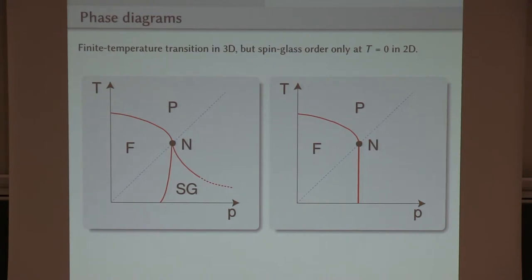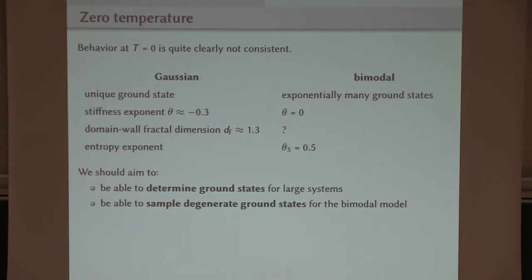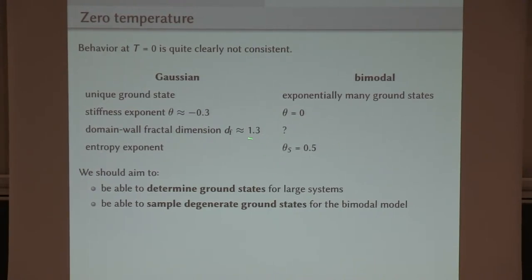There's a difference between two dimensions and higher dimensions. We don't expect spin glass phase at finite temperatures in 2D, but in three and higher dimensions, we do. So let's focus on the 2D case. If you look at the zero temperature behavior, we have this difference between unique ground state or unique ground state pair and exponentially many ground states.